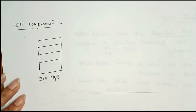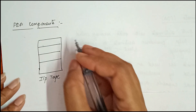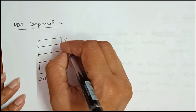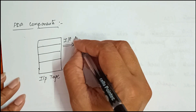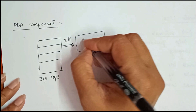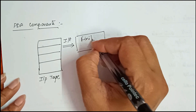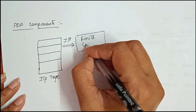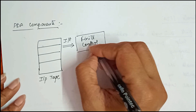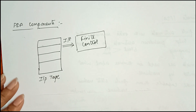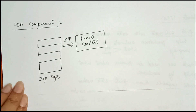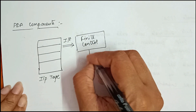From the input tape we read input and give it to the next component, which is the finite control. The functionality of the finite control is that it has a pointer which points to the current symbol which is to be read.